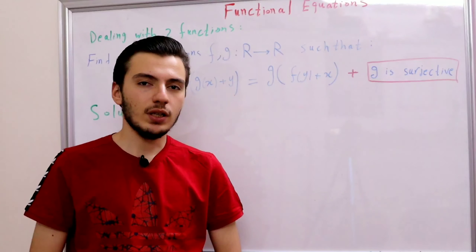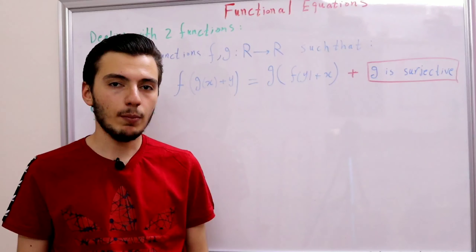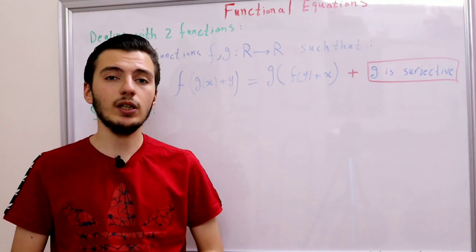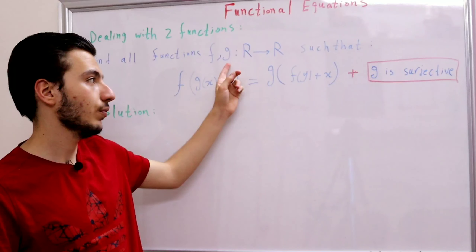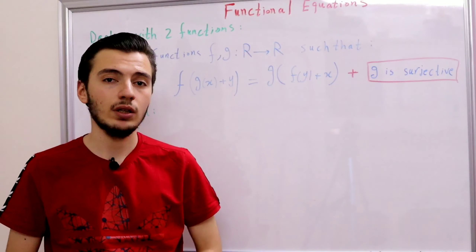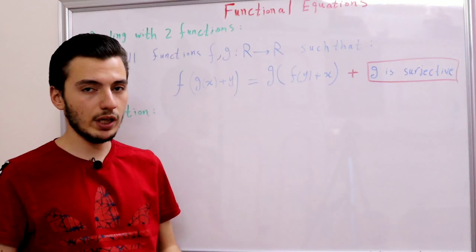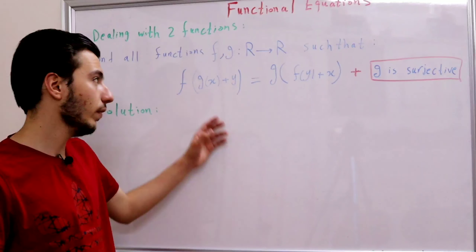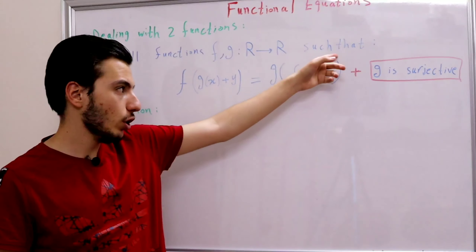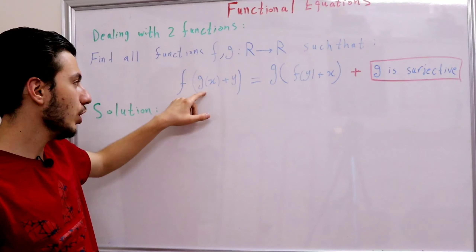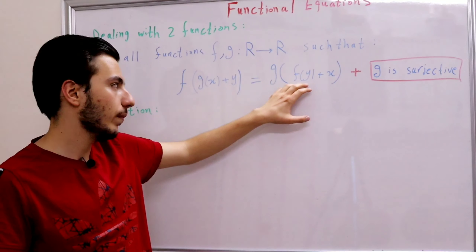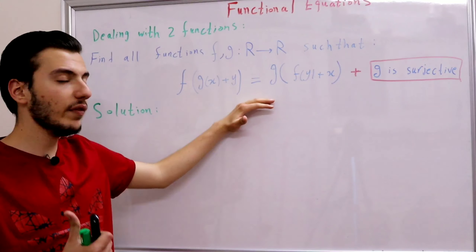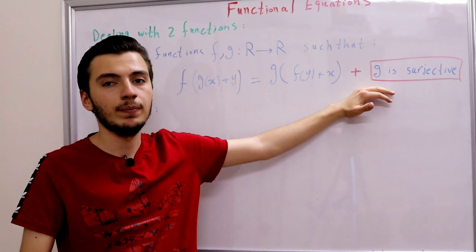Hello everyone and welcome to my YouTube channel. In this video we'll be discussing another functional equation, but this time instead of dealing with only one function f, we'll be dealing with two functions f and g. The problem asks us to find all functions f and g from ℝ to ℝ such that f(g(x) + y) = g(f(y) + x), given that g is surjective.